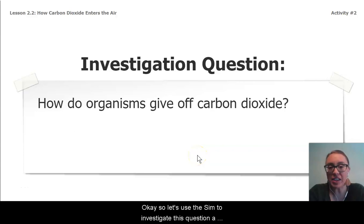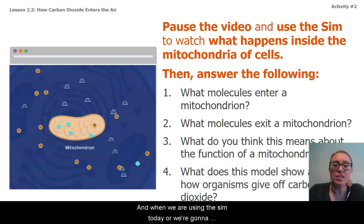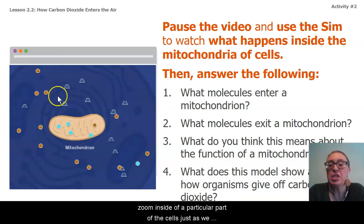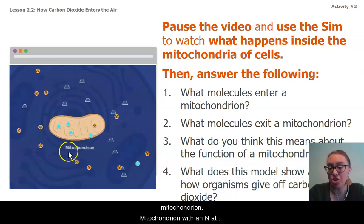Let's use the sim to investigate this question a little bit further. When we are using the sim today, we're going to zoom inside of a particular part of the cells. Just as we did when we were investigating photosynthesis inside the cells of producers, we zoomed in on a specific part of the cell called a chloroplast. Today we're going to zoom in on a specific part of the cell called a mitochondrion.